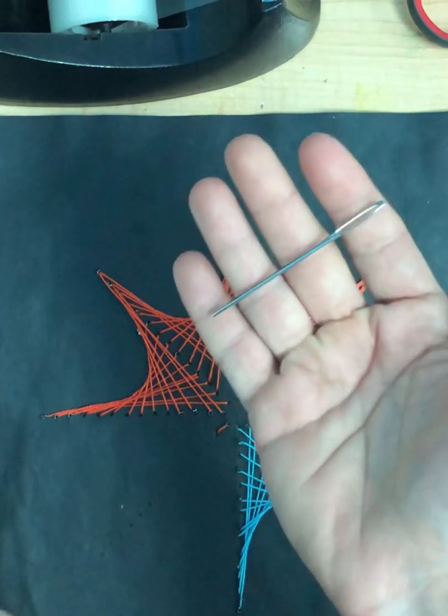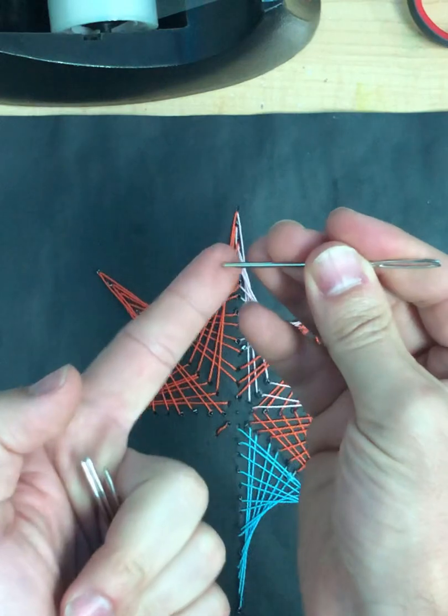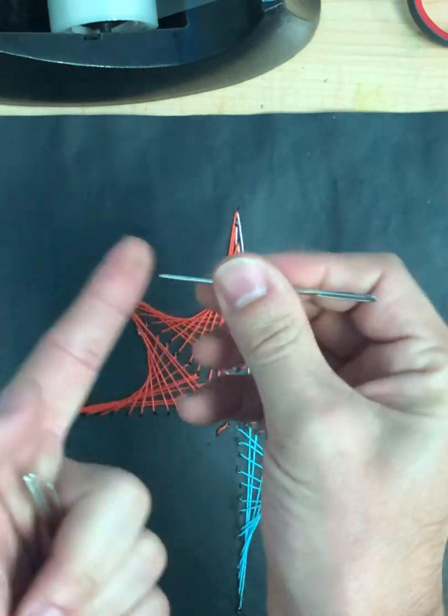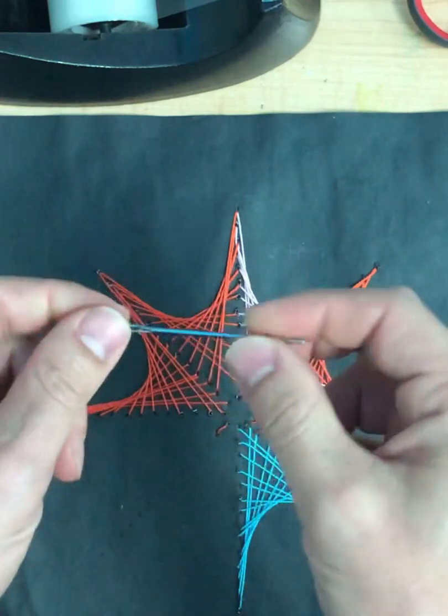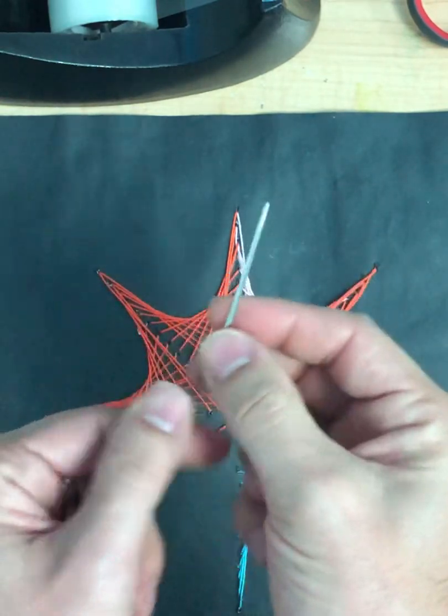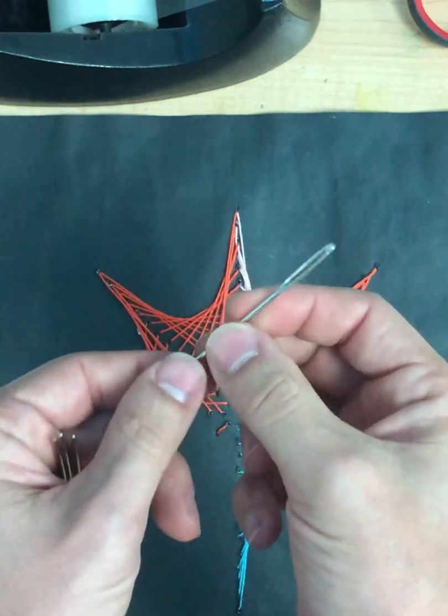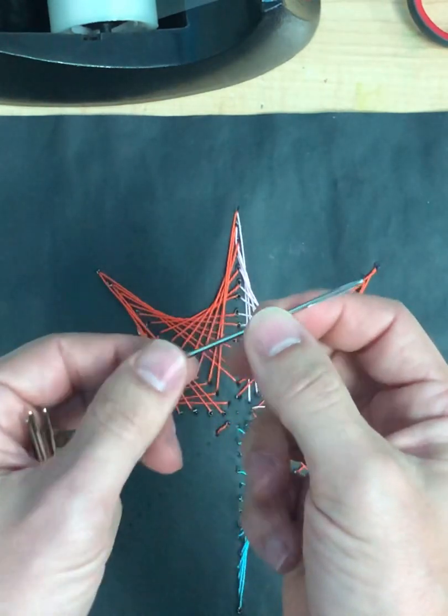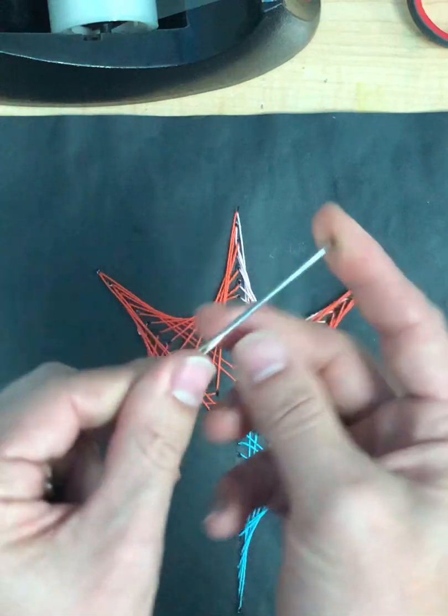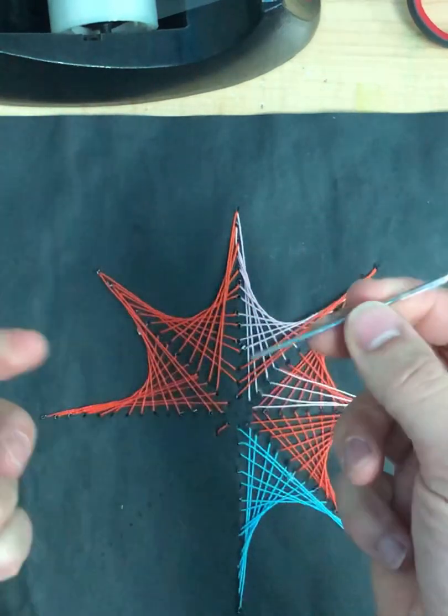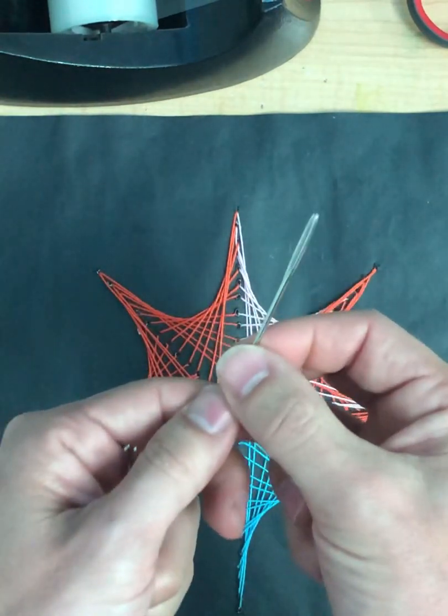So first of all, the needles, right? We are using blunt tip needles. They will not penetrate your skin through just accidental use. Keyword on accidental. Obviously, anything you use inappropriately could become a weapon, but in the four years I've done this, we've never had any students deliberately or accidentally hurt themselves. So blunt tip needles are pretty easy to find. Just be careful.